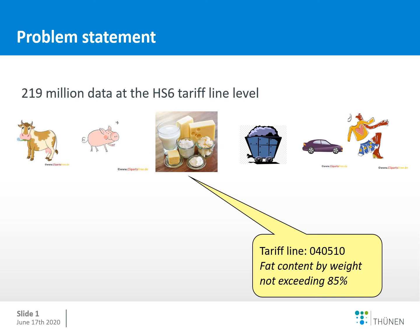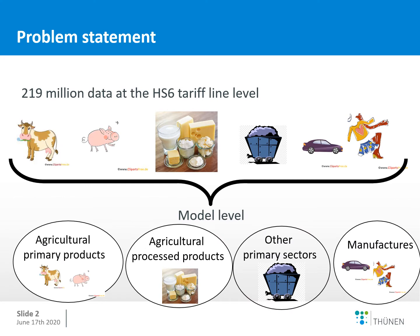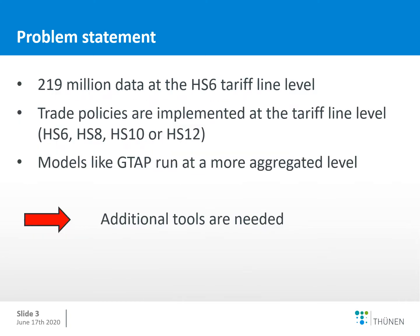At the model level, we have product aggregates like agricultural primary products, agricultural processed products, and other primary sectors and manufacturers, which are aggregated to the model level. While trade policies are implemented at the tariff line level — the HS6 level with six digits — there are even more detailed tariff line schedules organized at the 8, 10, or even 12 digit level. Models like GTAP run at a more aggregated level, so to aggregate tariff data from the detailed tariff line level to the model level, we need additional tools.